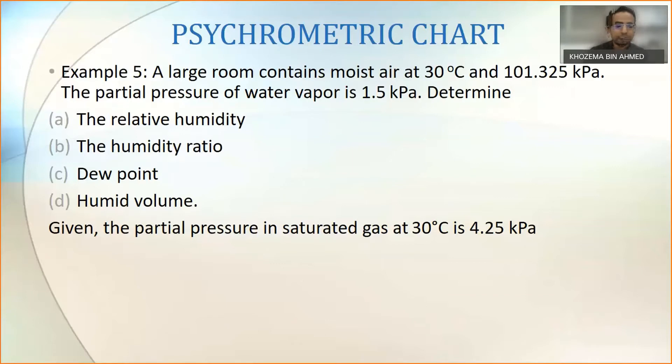So it asks us to find A, B, C, and D: the relative humidity, the humidity ratio, dew point, and humid volume. It is also given to us that the partial pressure in saturated gas at 30 degrees Celsius is 4.25 kilopascal. Now we want to function earlier in the class when discussing how to actually use psychrometric chart. For us to use it, we need two properties.